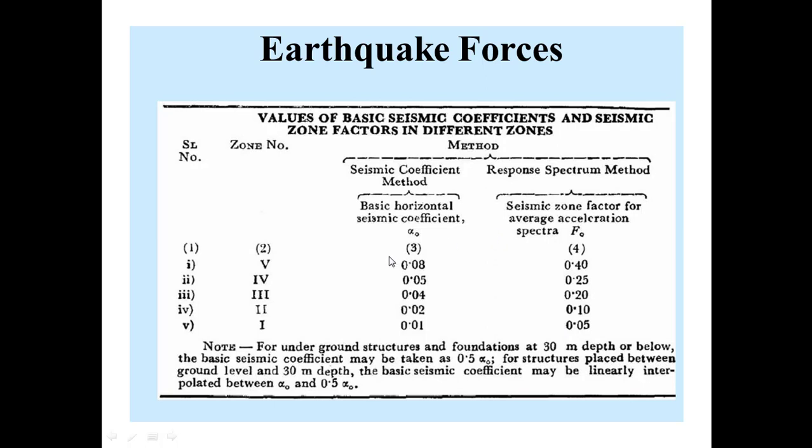For underground structures and foundations at 30-meter depth or below, the basic seismic coefficient may be taken as 0.5 × alpha_naught. For structures placed between ground level and 30-meter depth, the basic seismic coefficient may be linearly interpolated between alpha_naught and 0.5 × alpha_naught.